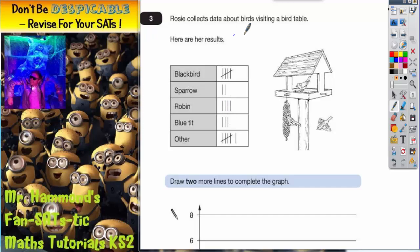Question three. Rosie collects data about birds visiting a bird table. Here are her results.